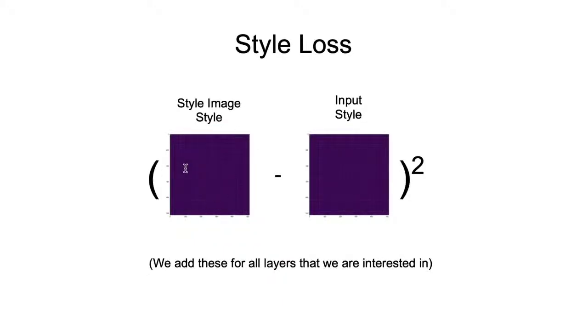The idea to pull out of this is that the gram matrix is basically the representation of the style. So, we want representation of the style of the style image to be almost the same as the representation of the style of the input. We square them to remove negative signs so that we cannot get cancellations. We just want them to be as close to zero as possible. And that is our style loss.